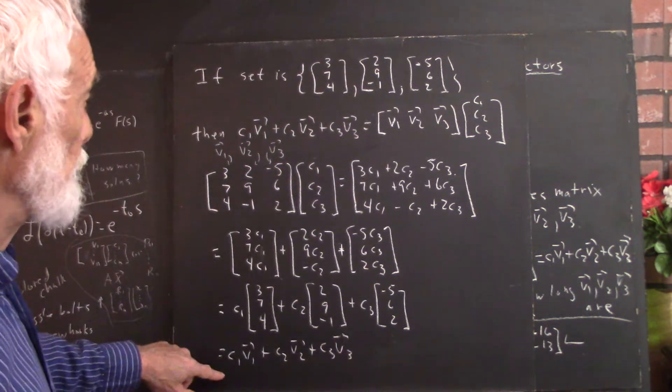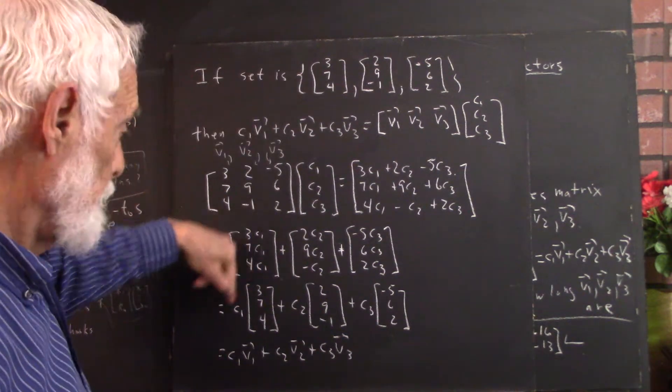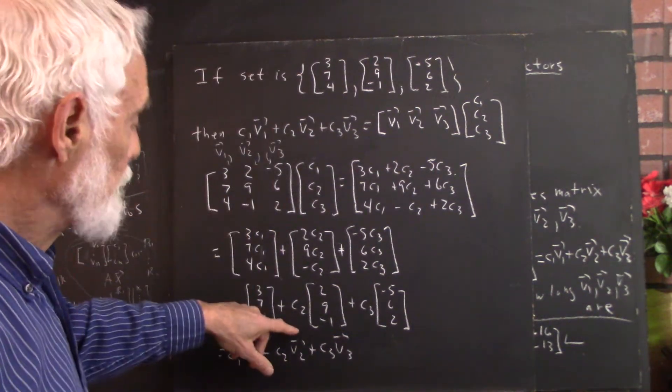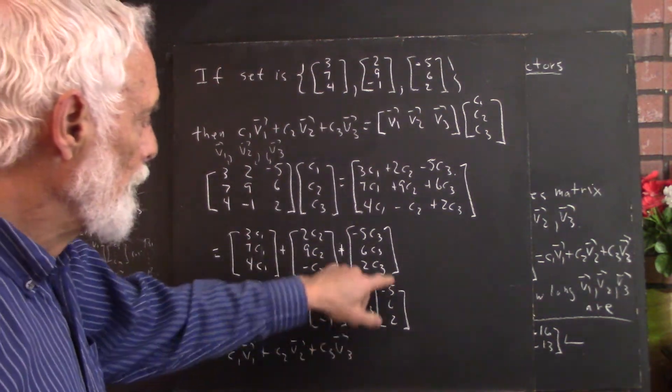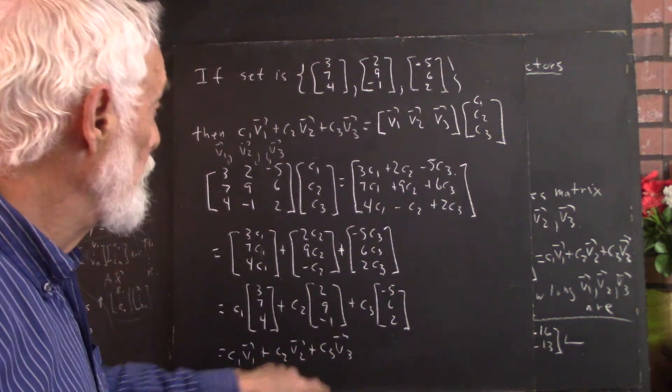In other words, you do c1 times v1, you get c1 times v1. Similarly, this is v2, so this is c2*v2, this is v3, here's c3*v3.